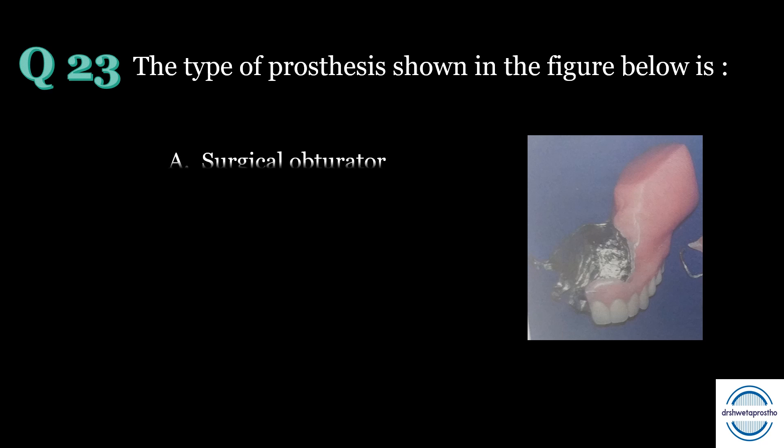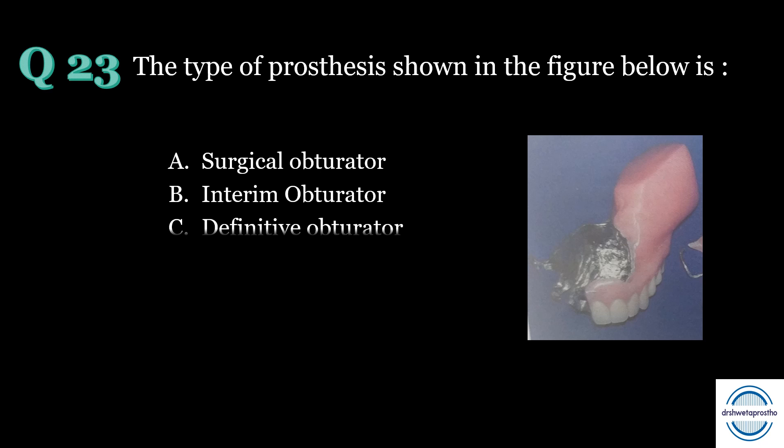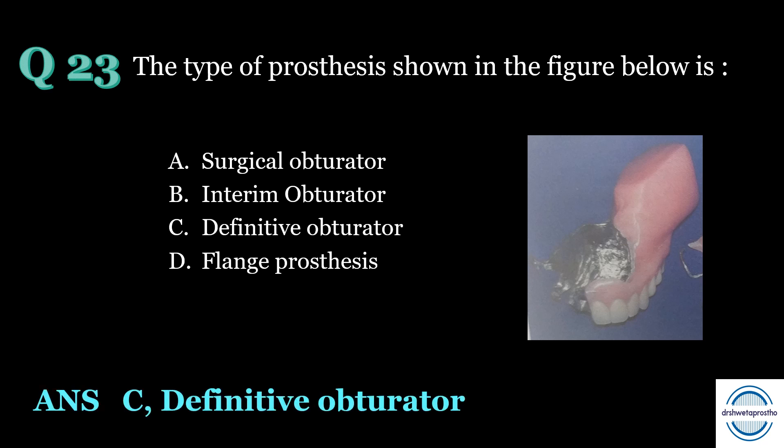Question number twenty-three: the type of prosthesis shown in the figure below is — A. Surgical obturator, B. Interim obturator, C. Definitive obturator, D. Flange prosthesis. The answer is C, definitive obturator. To solve this, you should know all three types. The surgical obturator appears as an artificial palate with clear acrylic. The interim obturator is made entirely of acrylic and may or may not have teeth. As the picture shows a metal base, it is a definitive obturator with teeth.